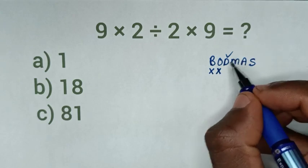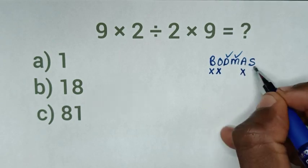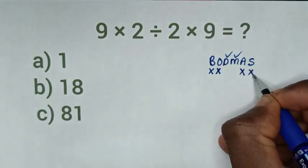And M, multiplication. We have multiplication and this multiplication. Addition - we don't have addition. Subtraction - we don't have subtraction.